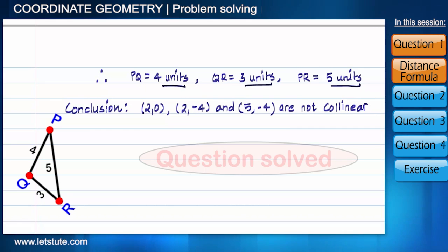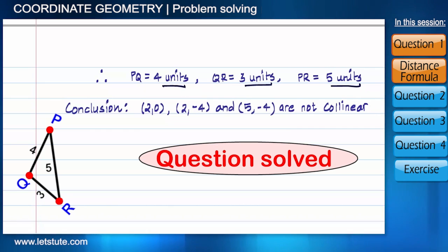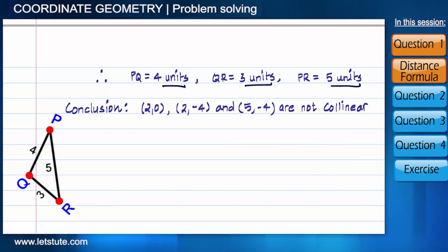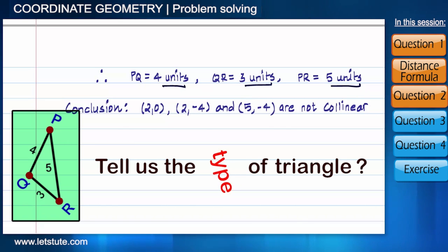You can see that before starting the solution we discussed a lot, and after that we solved it quickly without any mistake. But as we discussed, if points are not collinear they will form a triangle. So friends, can you tell me what kind of triangle it is?